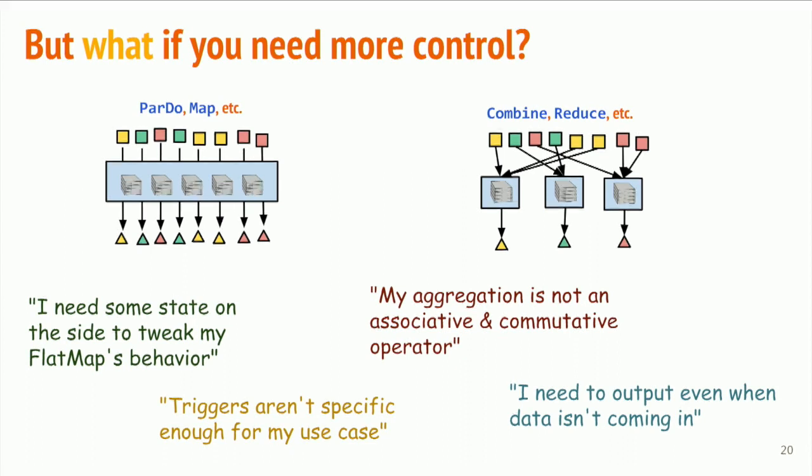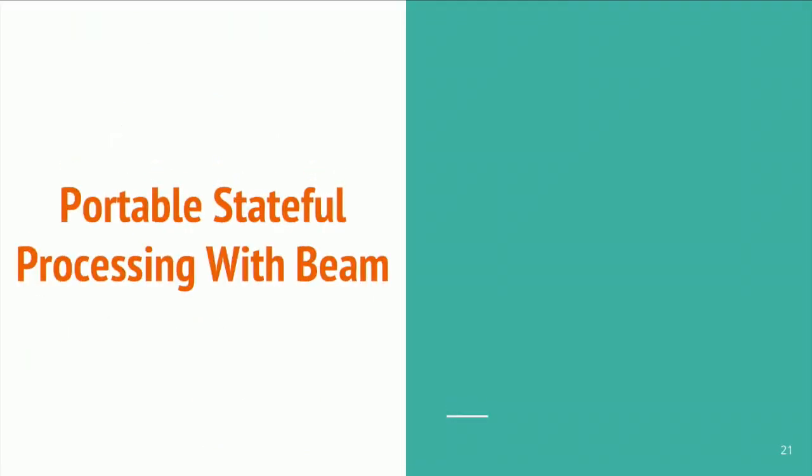But what if you need more control? This is something that comes up really all the time. There's a lot of scenarios that don't quite fit into this, like, super pure functional programming model. So, like, I need a little bit of state because I'm basically doing per element computation, but I tweak it now and again. Or you've got an aggregation that's not an associative commutative operator, or you don't really know how to naturally express it that way. Or Beam's triggers might not be specific enough for you. Maybe you need to do, like, really complex logic based on your domain. Like, maybe it's when you see, like, four people with a green shirt on them that you want to produce some output. And another really interesting case is that you need to produce some output when no data is coming in. For example, to indicate that the user's login has expired or something. All of those use cases are addressed by stateful processing.